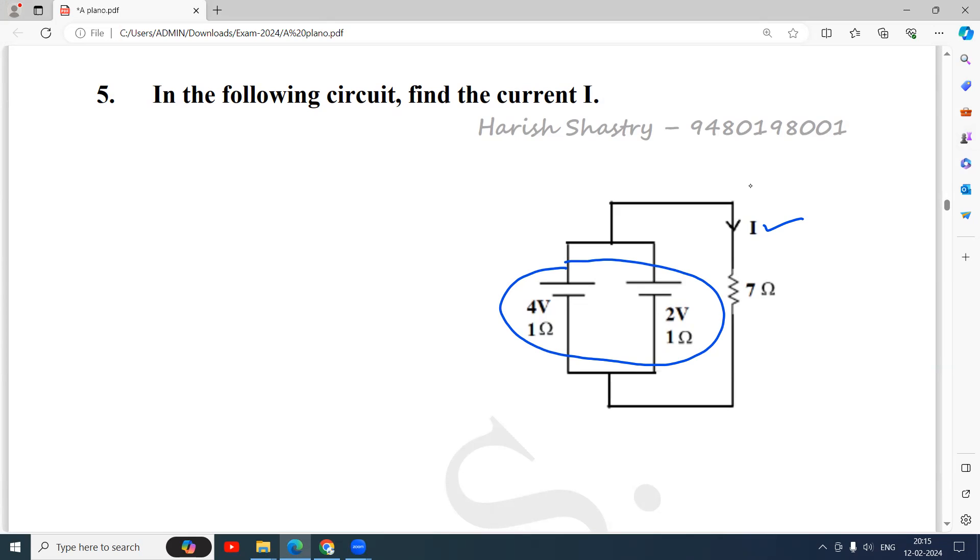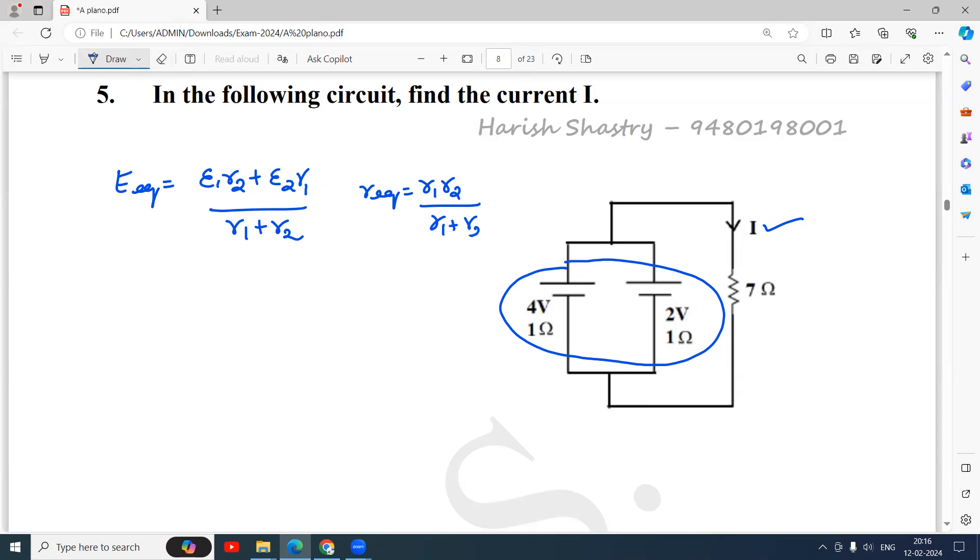So how to replace the two batteries by a single battery? You know when the two cells are connected in parallel, the equivalent emf is equal to E1·R2 plus E2·R1. Of course they are sending the current in the same direction to the external resistor, so there is no negative required in between here. It is plus E1·R2 plus E2·R1 divided by R1 plus R2.